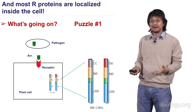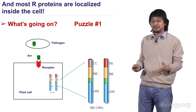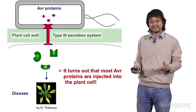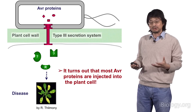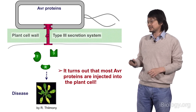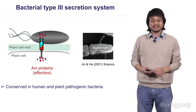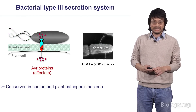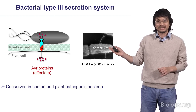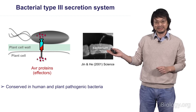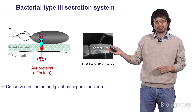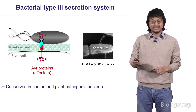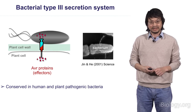What's going on? It doesn't really make sense, until we discovered that most of these AVR proteins from bacteria are actually directly injected into the plant cell through the type 3 secretion system. This is a very conserved system in bacterial pathogens of plants and animals. You can see the type 3 secretion system on the electron microscope - like a syringe-like injection system - that allows bacteria to penetrate through the plant cell wall.